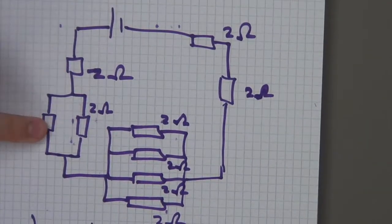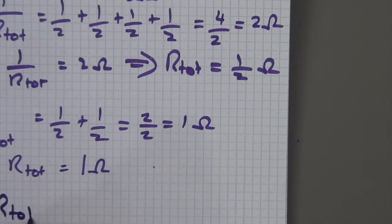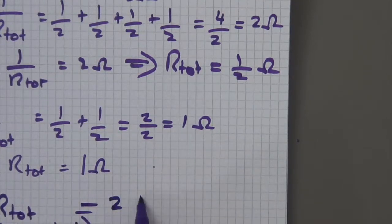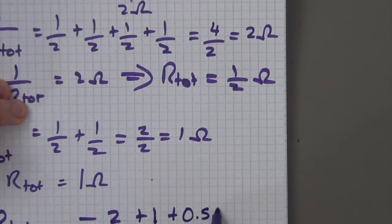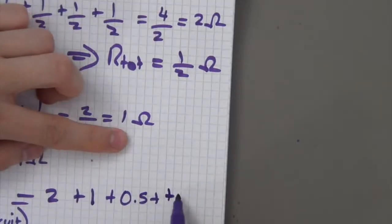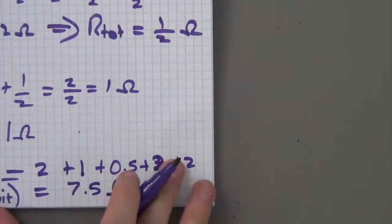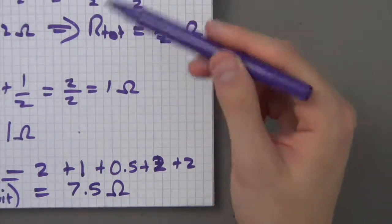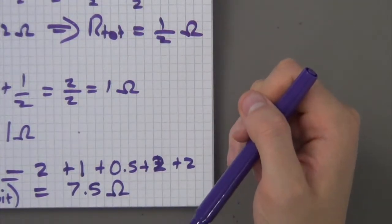Now adding all sections in series: two plus one (from the second parallel section) plus one half (from the first parallel section) plus two plus two. So R_total of the entire circuit equals two plus one plus 0.5 plus two plus two, which gives 7.5 ohms. That's the most difficult arrangement of resistors you could get in your exam — just practice using those two rules and that's it.